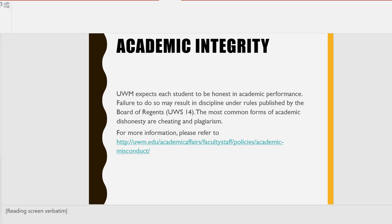Academic integrity: UWM expects each student to be honest in academic performance. Failure to do so may result in discipline under rules published by the Board of Regents, UWS 14. The most common forms of academic dishonesty are cheating and plagiarism.